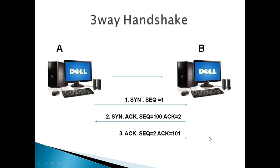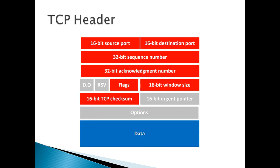We have to send a sequence number. If you want to send the sequence number, you can send the details and receive an acknowledgment. This completes the 3-way handshake. You can see this in the TCP header.